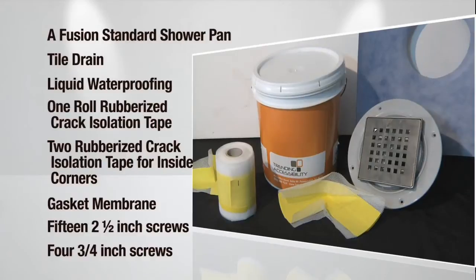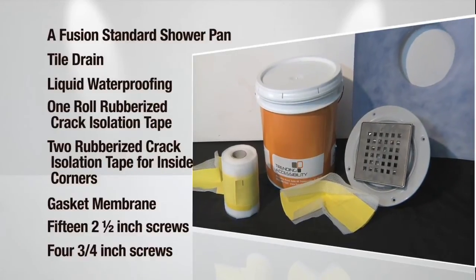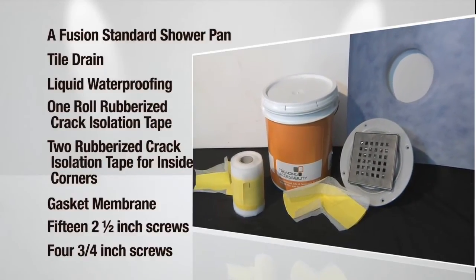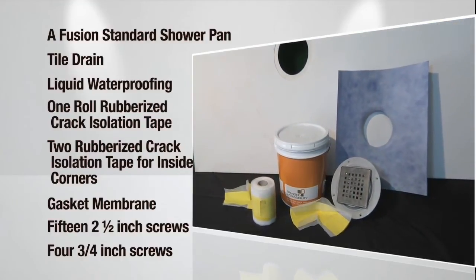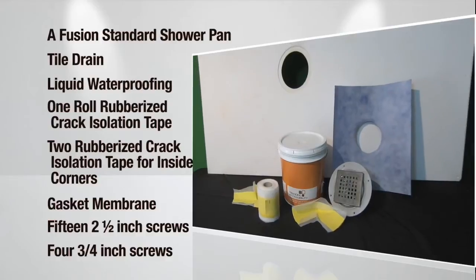First, let's look at your installation kit. It includes the structural, load-bearing standard fusion shower pan, the tile drain, liquid waterproofing, one roll of rubberized crack isolation tape.